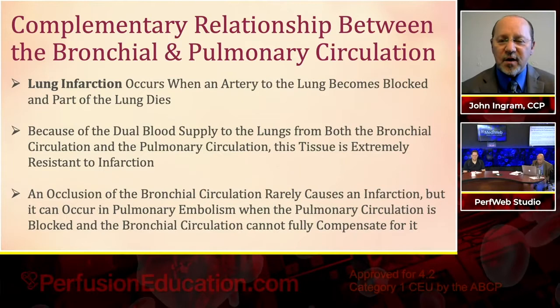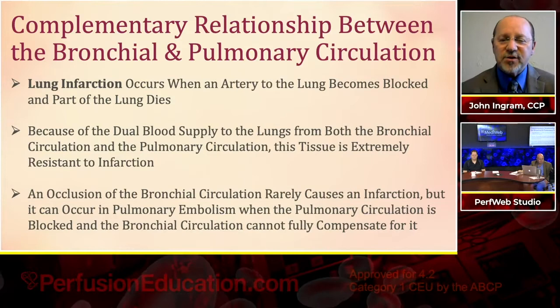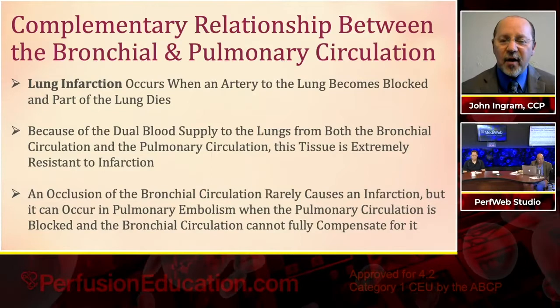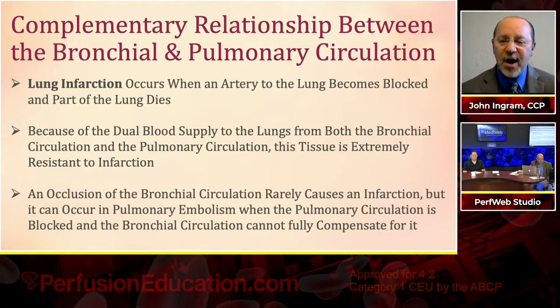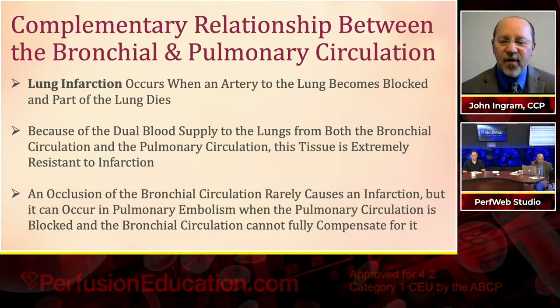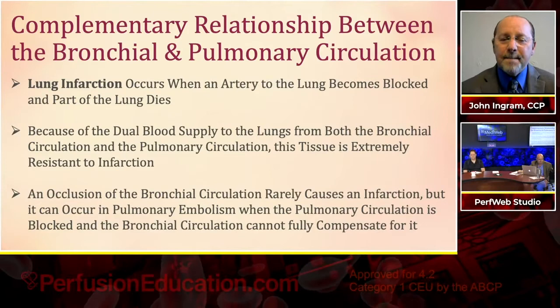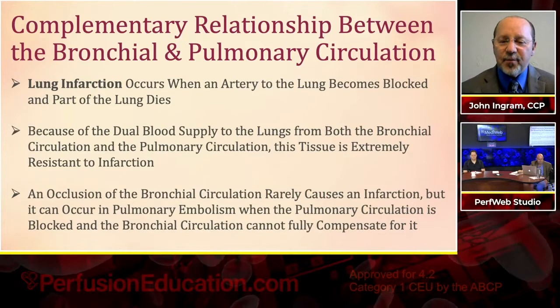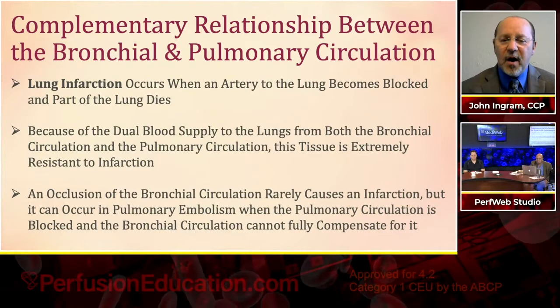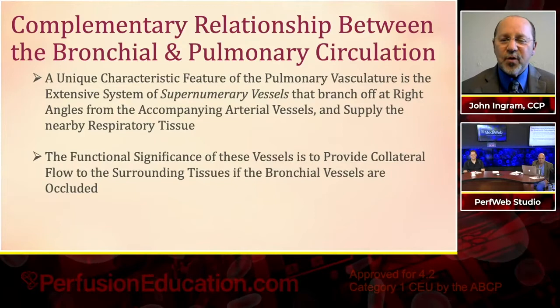Here's the surprise not in the outline. We talk about two separate circulations, but they are complementary. Lung infarction occurs when an artery becomes blocked and part of the lung dies. But because of the dual blood supply from both bronchial and pulmonary circulations, lung tissue is extremely resistant to infarction. An occlusion of the bronchial circulation rarely causes an infarction, but pulmonary infarction can occur with a pulmonary embolism because the pulmonary circulation is blocked and the bronchial circulation cannot fully compensate.